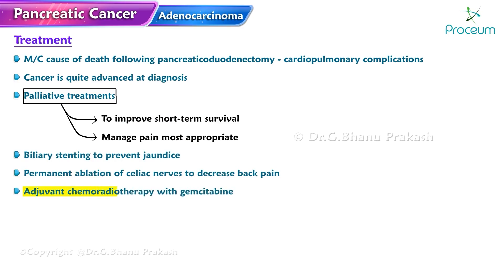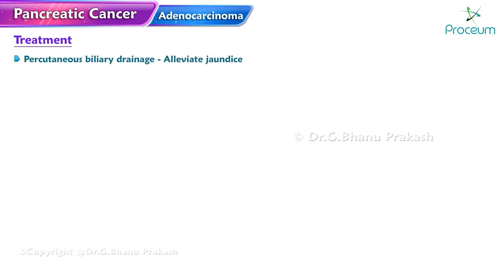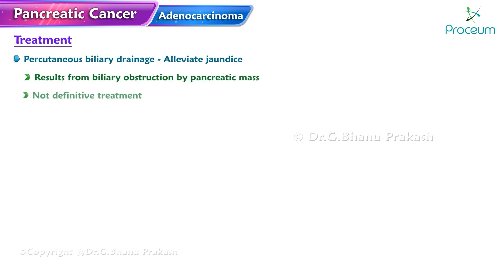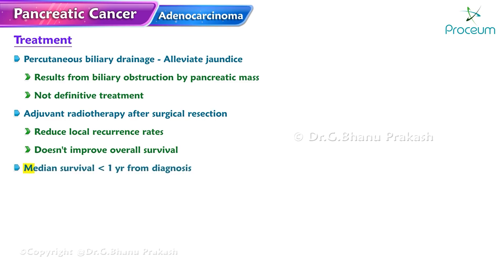Adjuvant chemoradiotherapy with gemcitabine to sensitize the tumor to radiation has been shown to improve survival, but only surgical resection is potentially curative if the cancer is resectable. Percutaneous biliary drainage alleviates jaundice from biliary obstruction but is not a definitive treatment. Adjuvant radiotherapy after surgical resection has been shown to reduce local recurrence rates but does not improve overall survival. Median survival is less than one year from diagnosis.